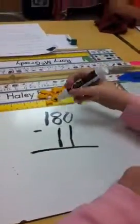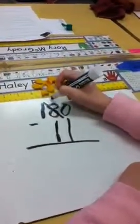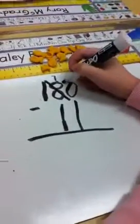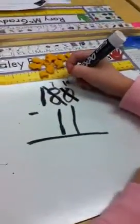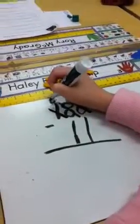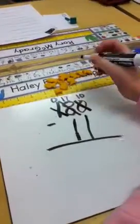So first you've got to cross this out. That becomes a 7, and that becomes a 10. And that becomes a 0. And the 0 makes the 7, because it becomes a 17.